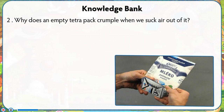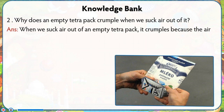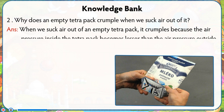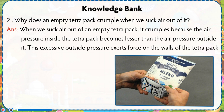Number 2: Why does an empty tetra pack crumple when we suck air out of it? Answer: When we suck air out of an empty tetra pack, it crumples because the air pressure inside becomes lesser than the air pressure outside. This excessive outside pressure exerts force on the walls of the tetra pack and makes it crumple.